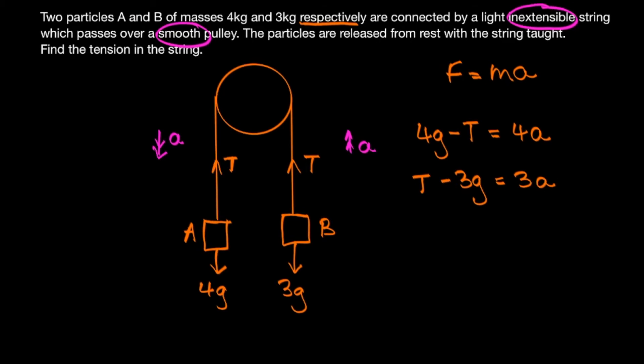So this leaves us with two unknowns, T and a, and two equations, which means that we can solve this set of simultaneous equations for T and a. So let's start by adding the two equations together to eliminate T. So that will give us on the left 4g minus 3g, so g. And on the right we're going to add them together, so we get 7a.